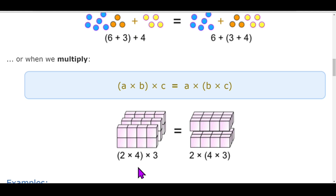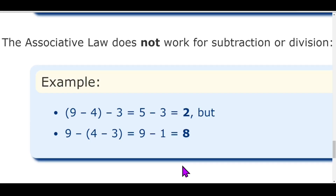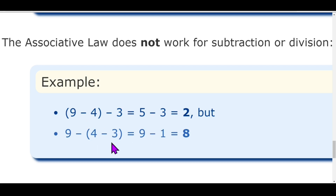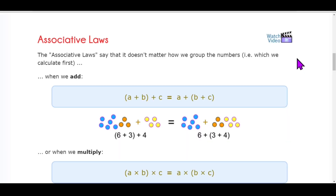This property is applicable on addition and multiplication, but again there is a limitation — just like the commutative law, the associative law doesn't work for subtraction and division. For example, (9 − 4) − 3: solve the bracket first — nine minus four is five, and five minus three is two. But if we change the grouping: four minus three is one, and nine minus one is eight. The results differ, which proves associative law is not applicable on subtraction and division.